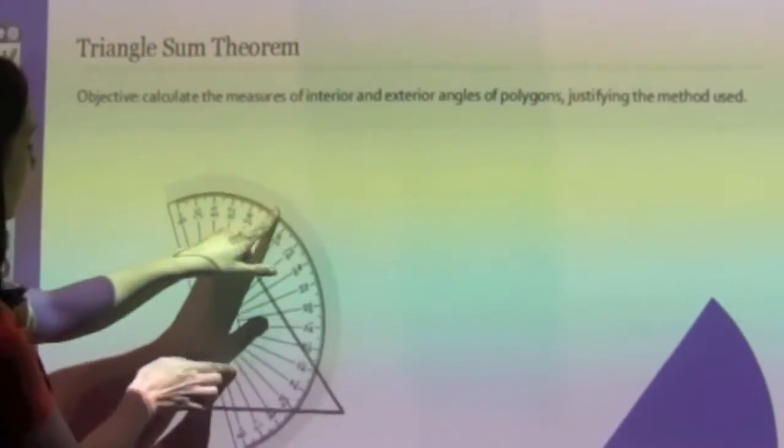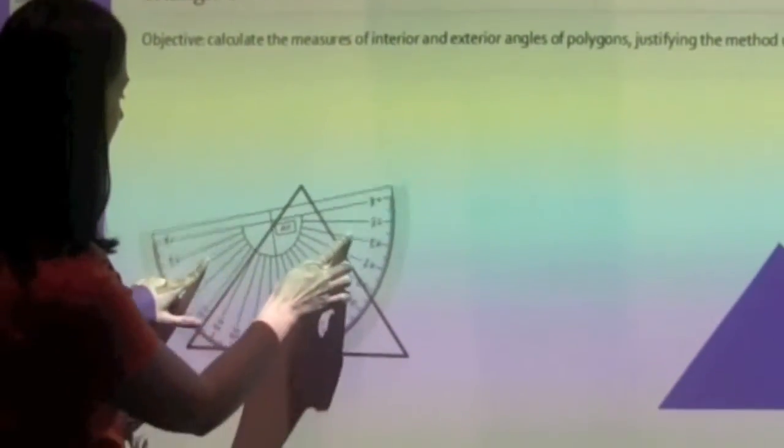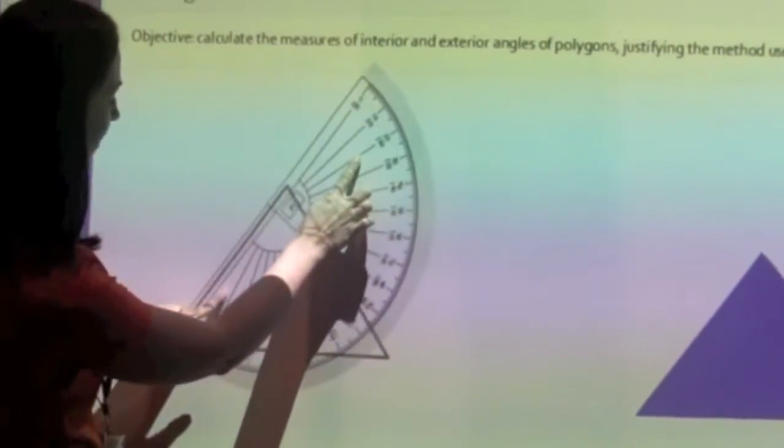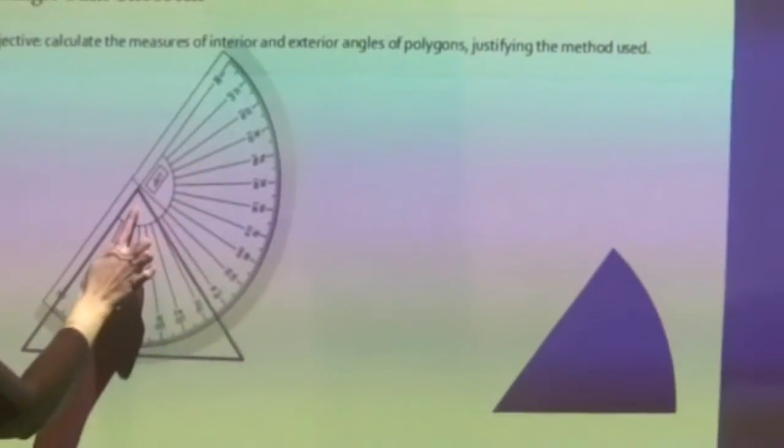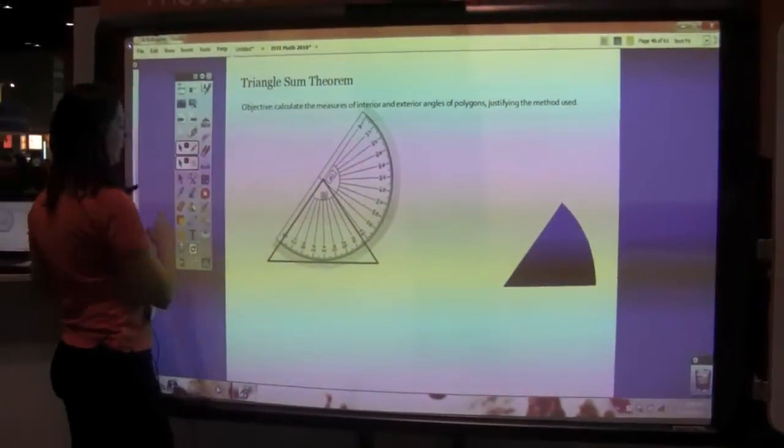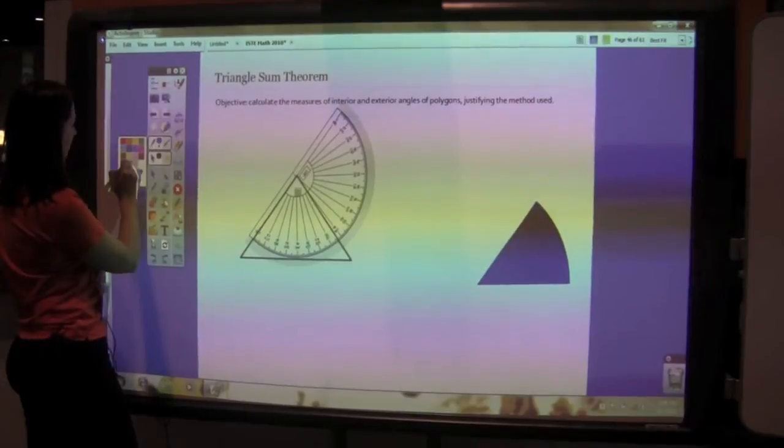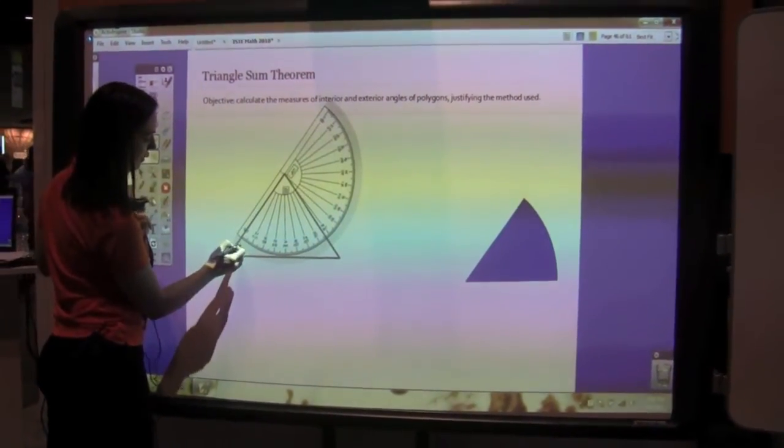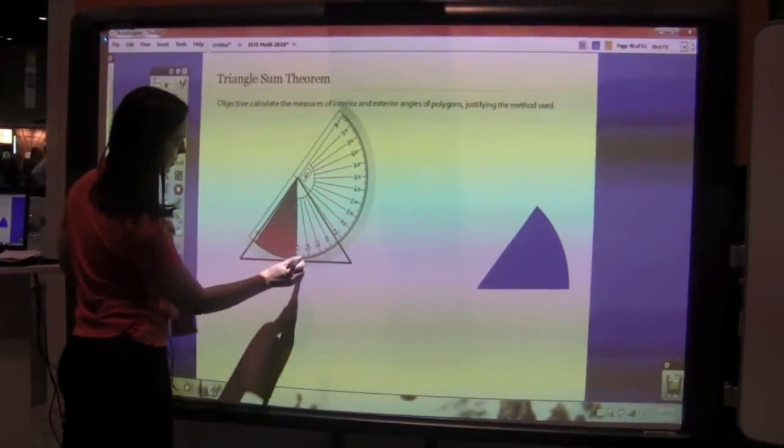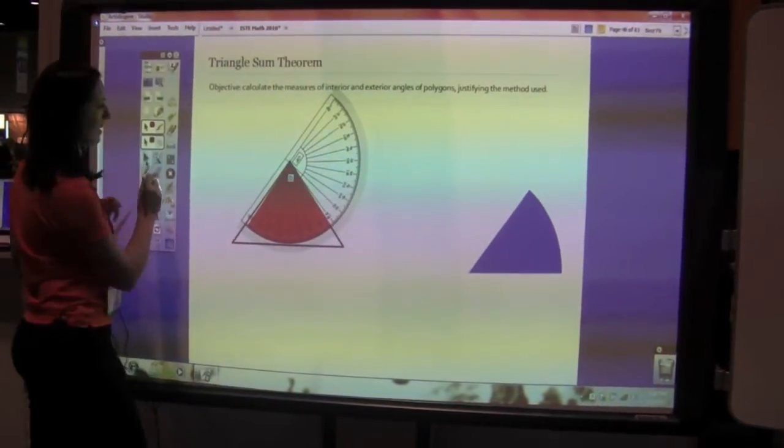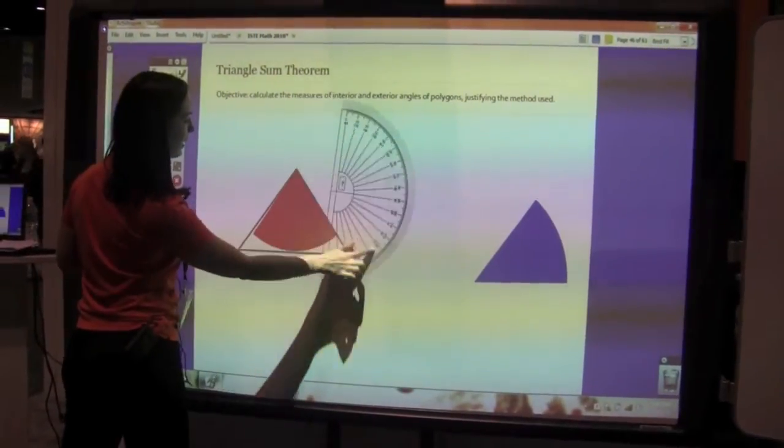I'm going to go ahead and rotate my protractor again and line it up with the second angle here. And we'll choose a different color here. We'll make our second angle. Move that out of the way.